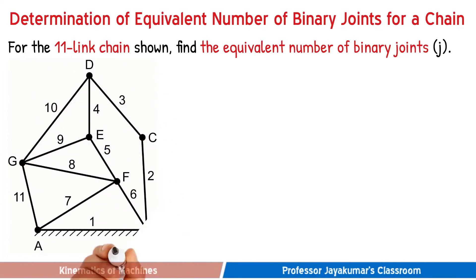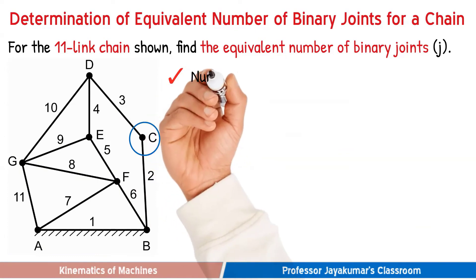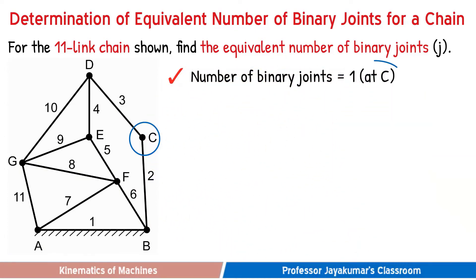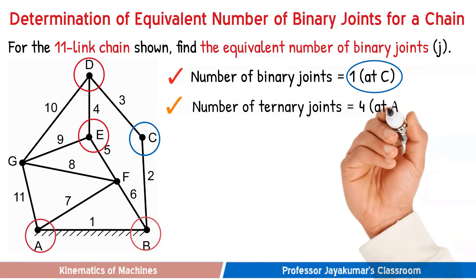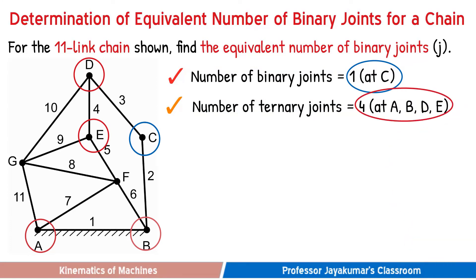Here we have an eleven link chain and it has joints A to G. Going by each joint one at a time, we can see we have one binary joint at point C, whereas joints A, B, D and E are ternary joints where three links are joined. Finally, the two remaining joints, F and G, have four links connected, and hence we have two quaternary joints.